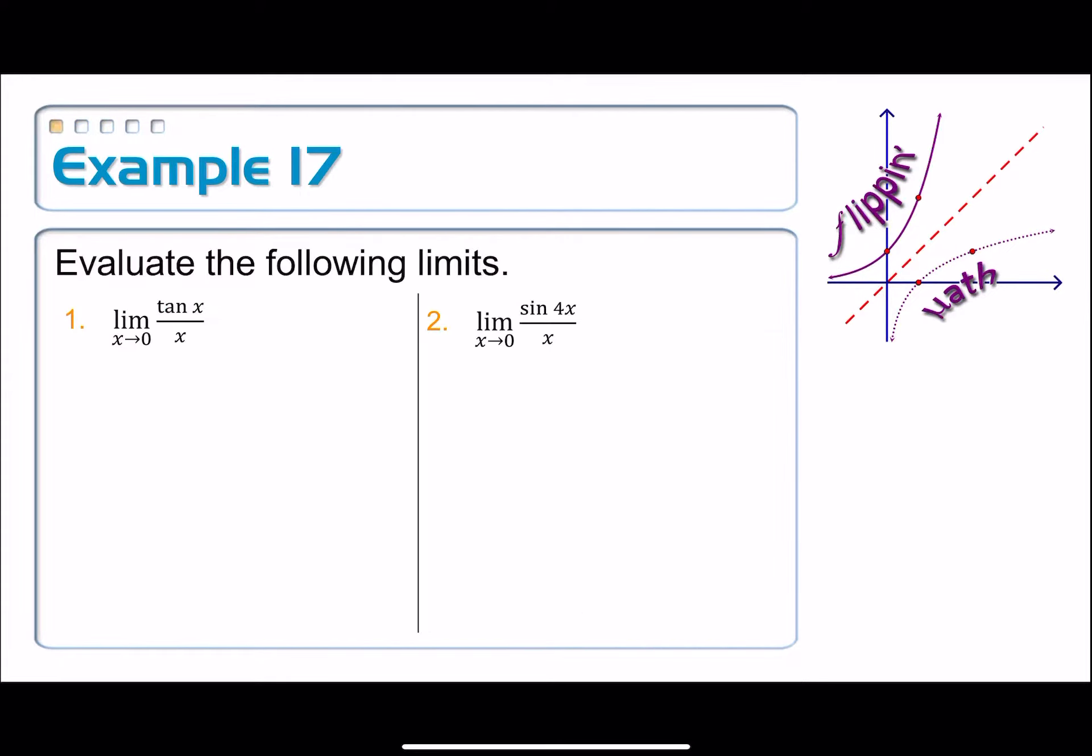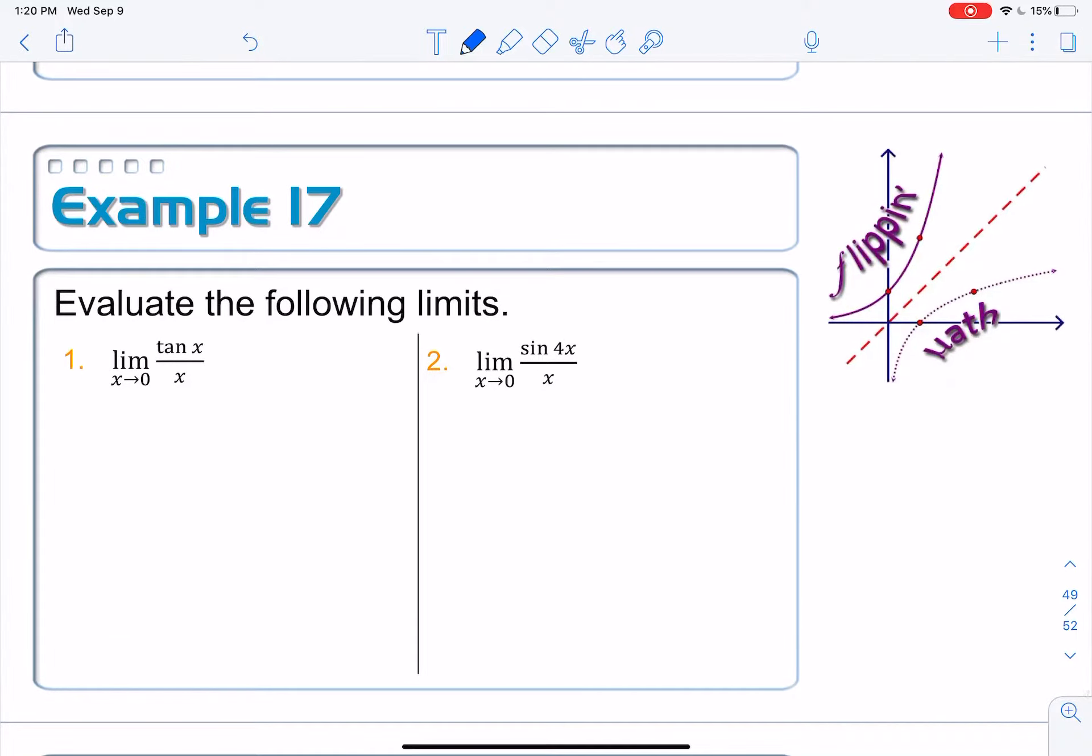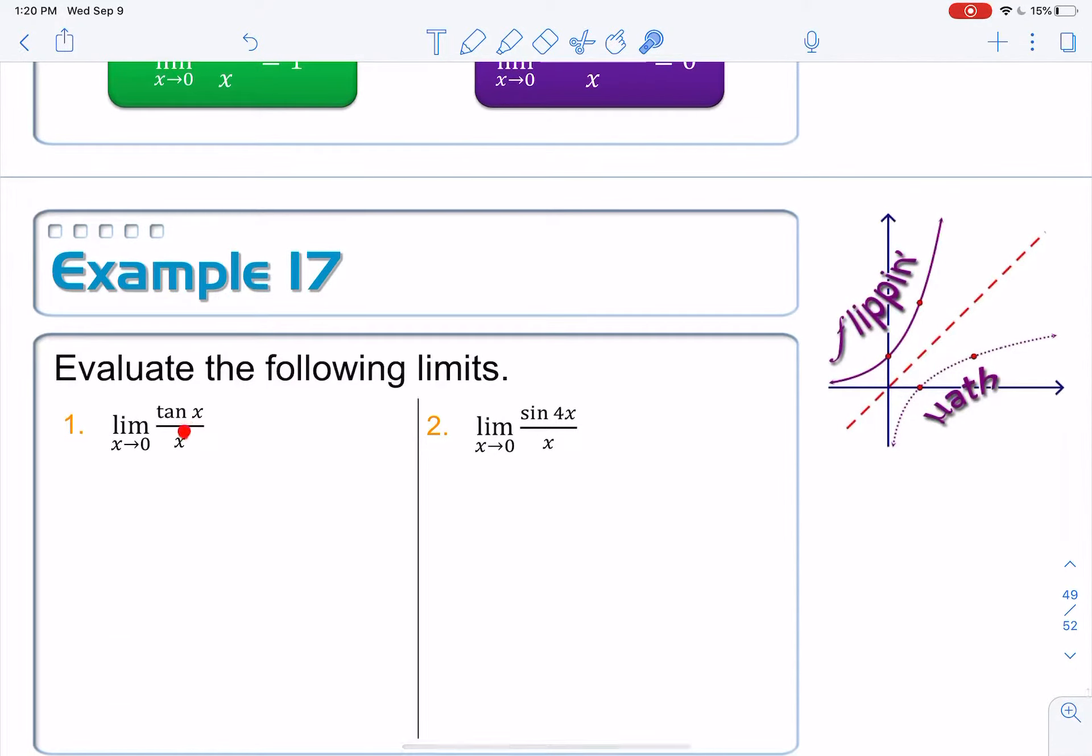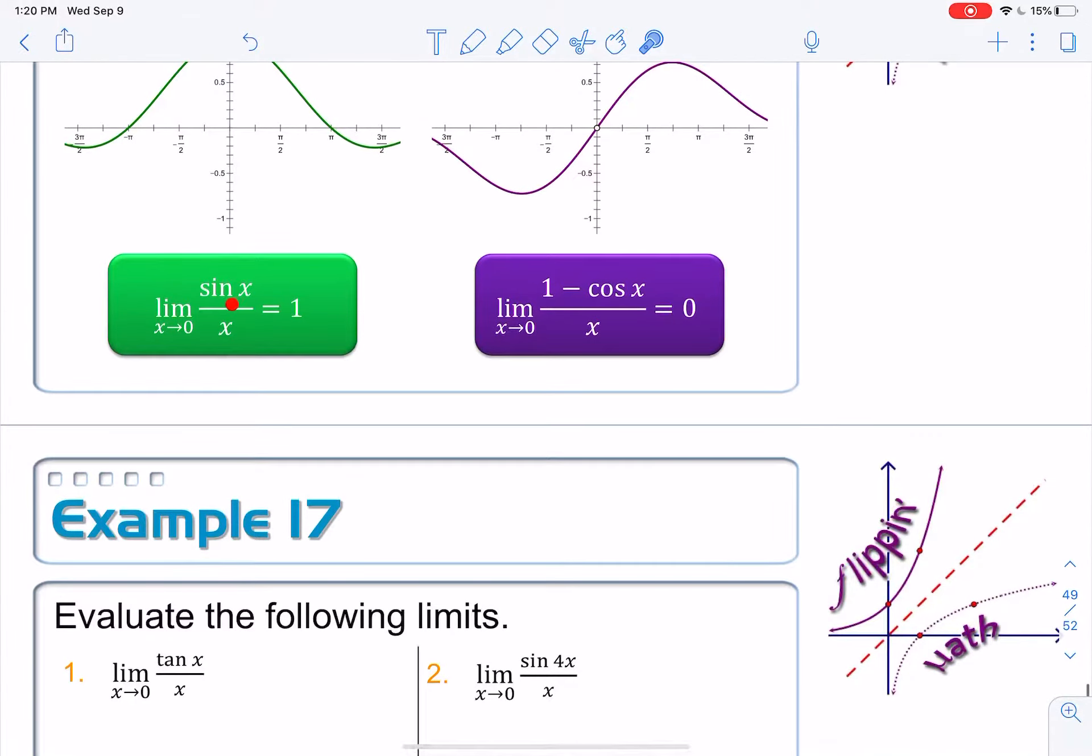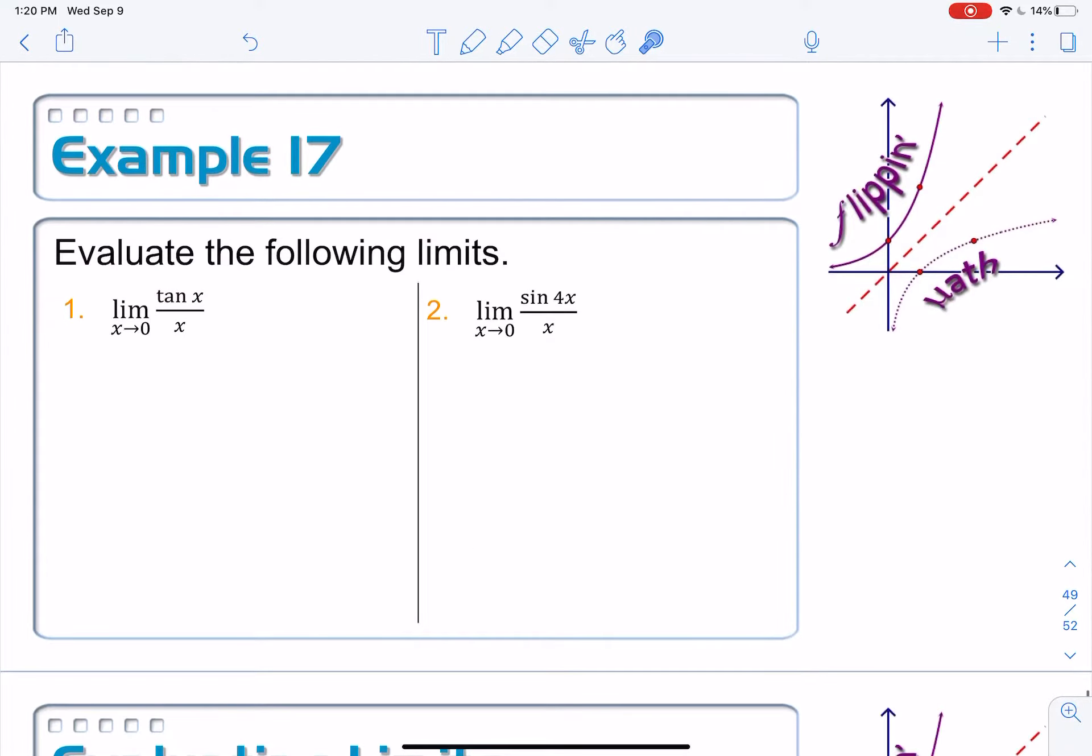Trig substitution is now going to be our next strategy, as you're going to see in these next two examples. I want to evaluate the limit as x approaches 0 of tangent x over x and the limit as x approaches 0 of sine of 4x over x. So, notice that this tangent x over x looks pretty similar to what we have here. And so what I'm going to do is I'm going to see if I can force this to happen in this limit.